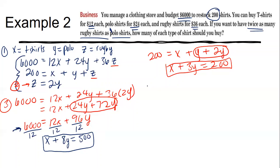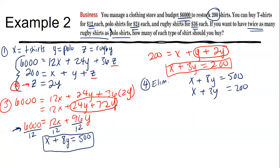Step four: solve using elimination. We have x + 8y = 500 and x + 3y = 200. Multiply the bottom equation by −1: −x − 3y = −200. Add the equations: the x terms cancel, 8y − 3y = 5y, and 500 − 200 = 300. So y = 60.